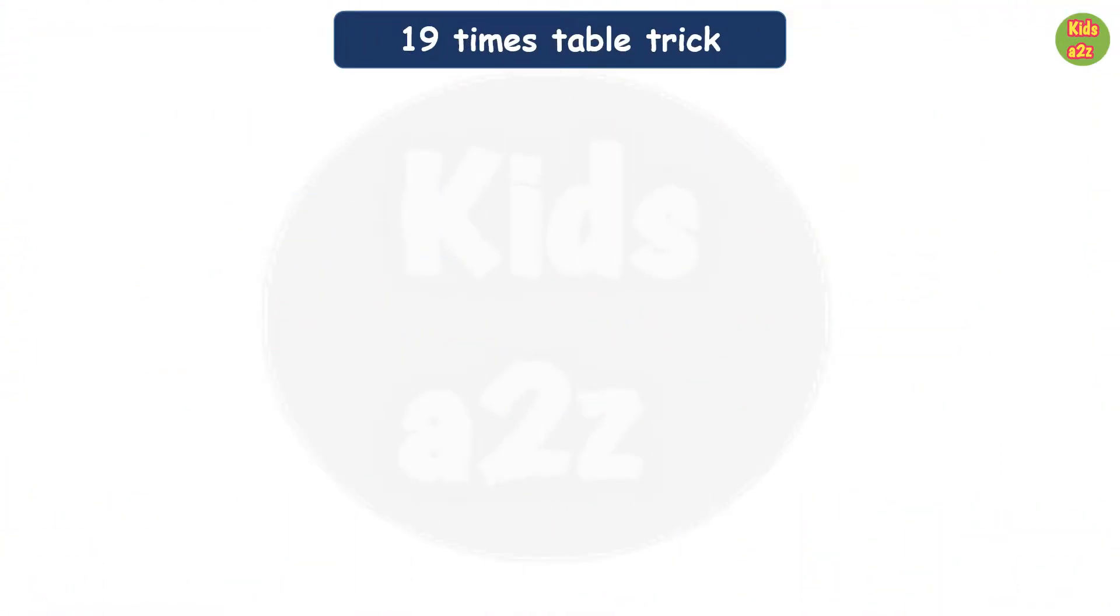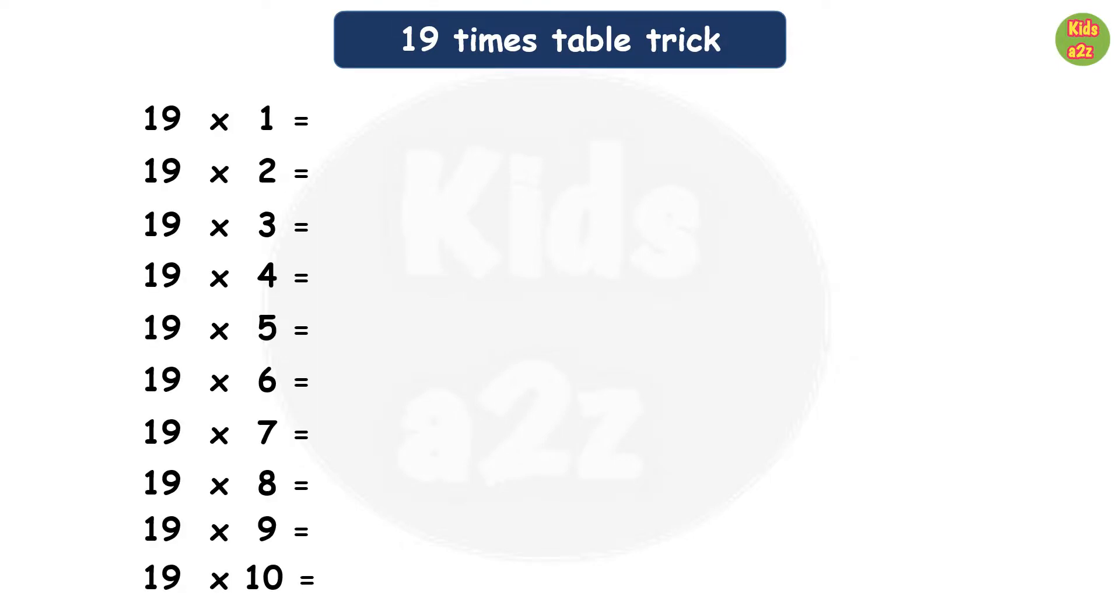To find the multiplication table of 19, at first we will write the table like this. Now for the ones column, we have to write all the numbers from 9 to 0 in descending order, like 9, 8, 7, 6.